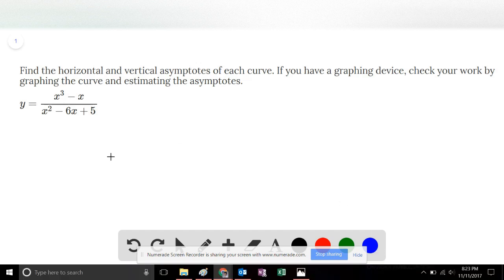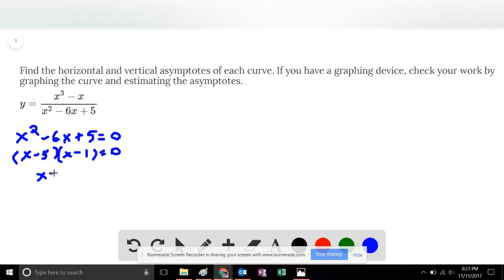For our vertical asymptote, we ask ourselves, what values make the denominator equal to 0? So we go ahead and try it out. x squared minus 6x plus 5 equals 0. We factor the quadratic into two binomials, minus 5, minus 1. This gives us x equals 5 and x equals 1.